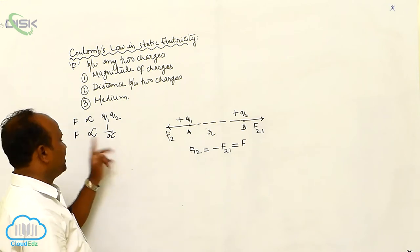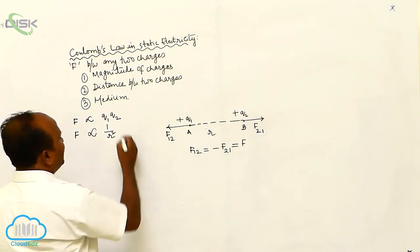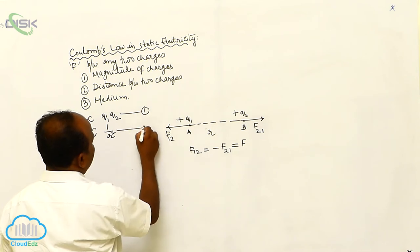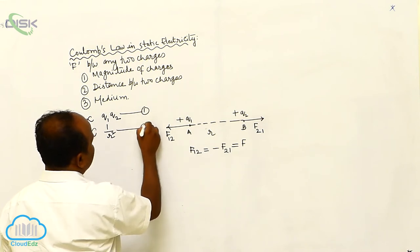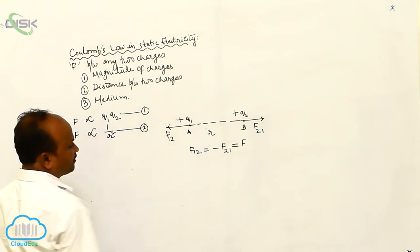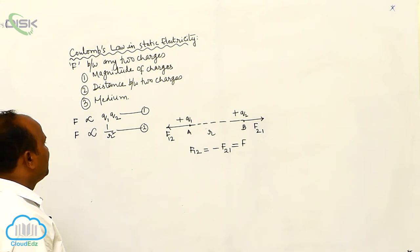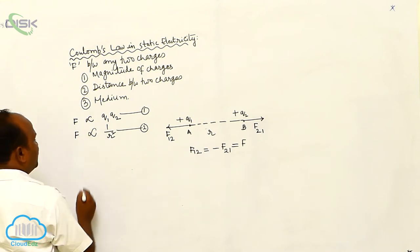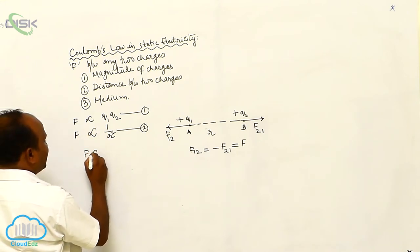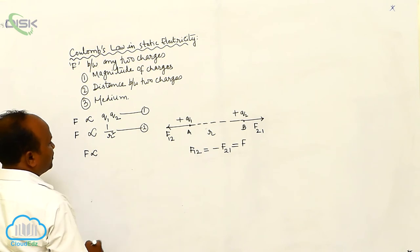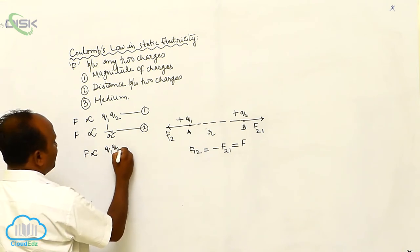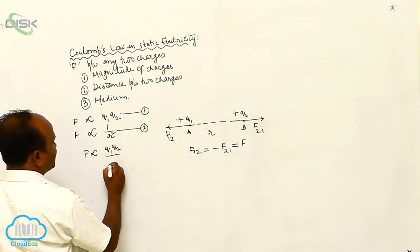That is why there is an inverse proportionality. Calling these the first and second equations and combining both, F is directly proportional to Q1 multiplied by Q2 divided by R².